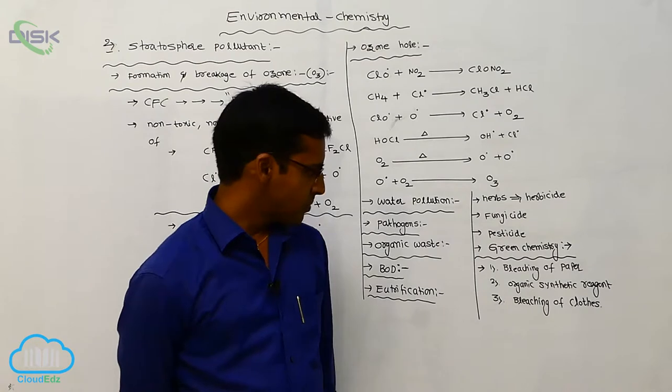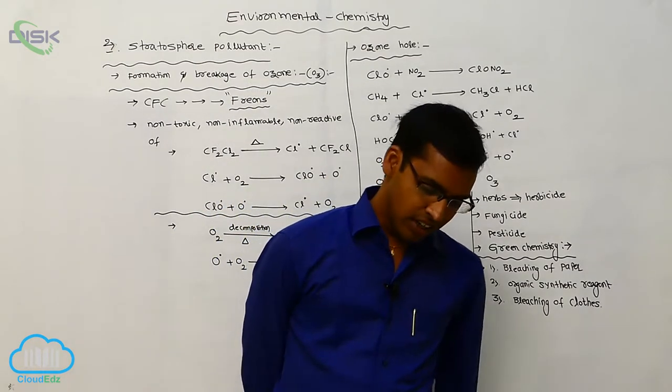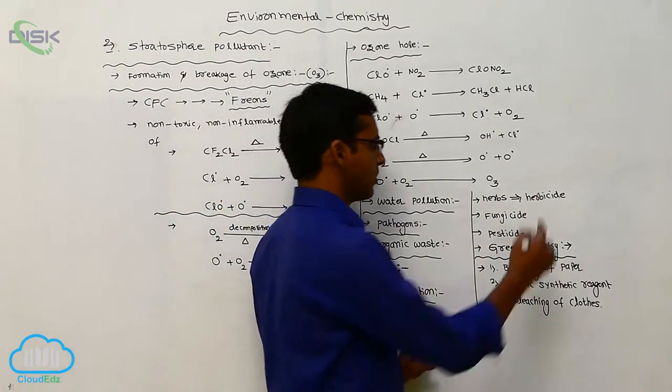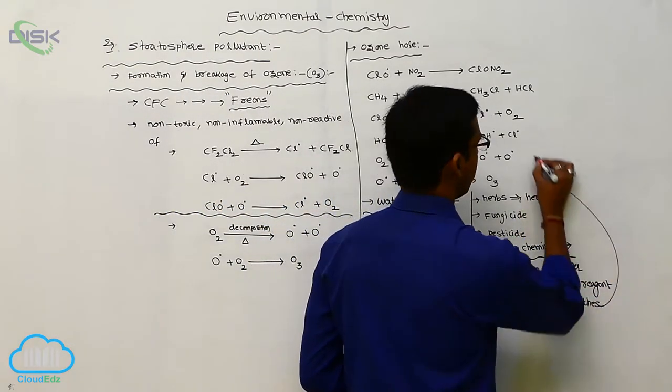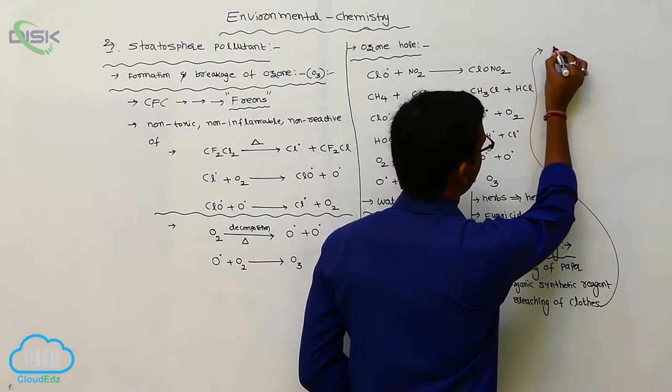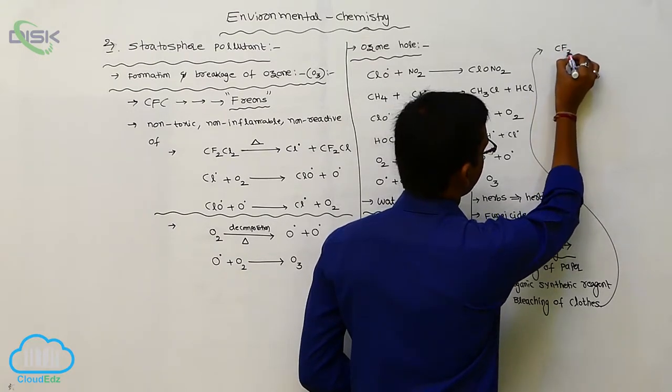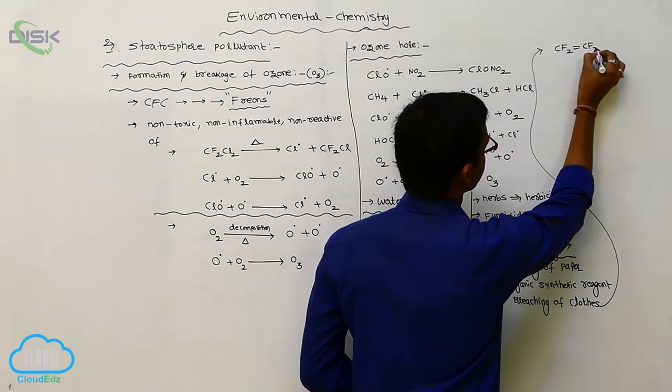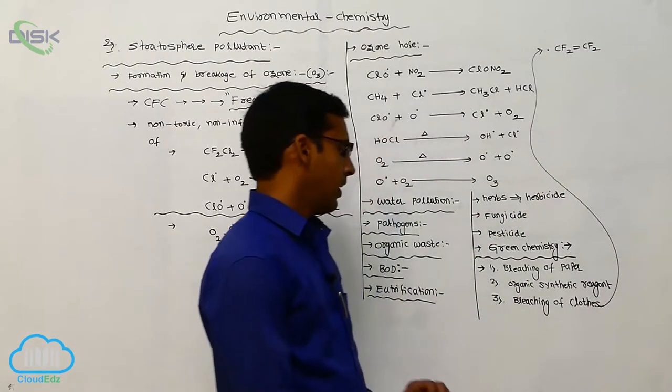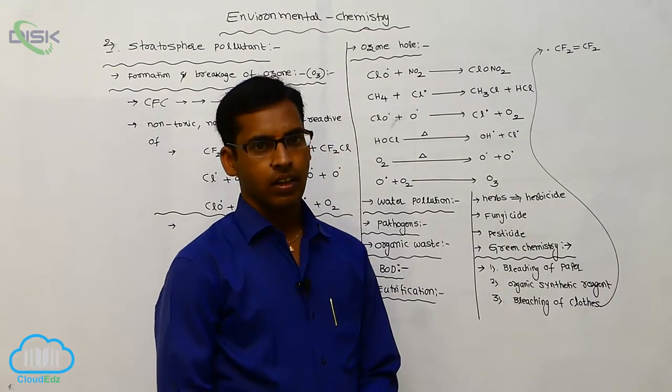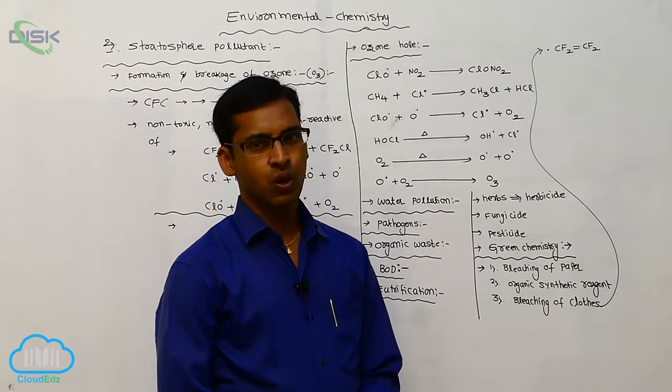And next one is bleaching of cloth. For this purpose, we use tetrafluoroethylene, which acts as a cleansing agent or cleaning action of cloth.